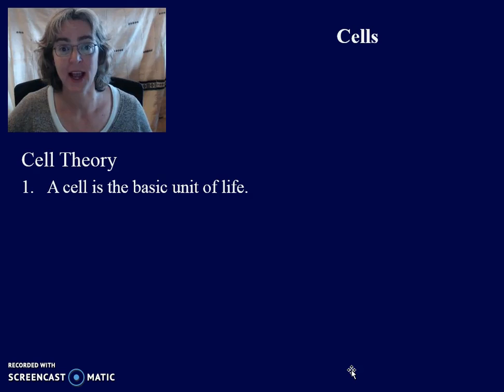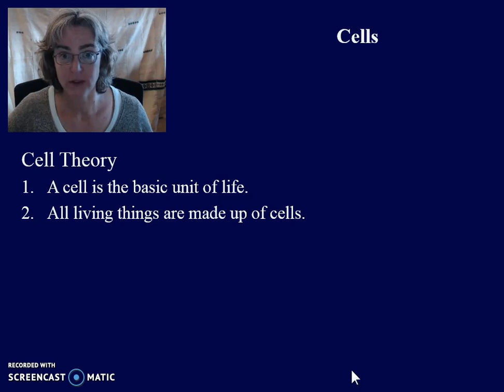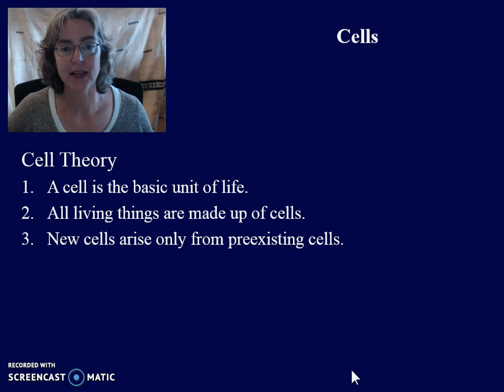The first part of cell theory is that a cell is the basic unit of life — we learned that when talking about biological organization. Second, all living things are made up of cells. Third, new cells arise only from pre-existing cells.